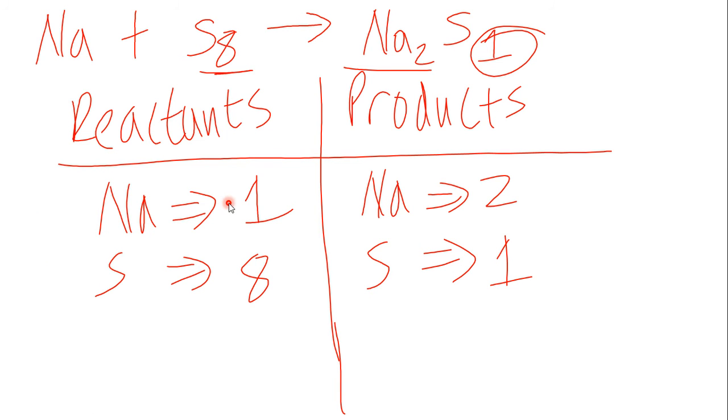Notice that there's an imbalance. We have one here and two here, eight here and one here, so there's clearly an imbalance. Let's balance the equation.